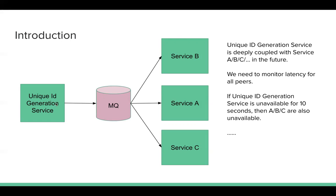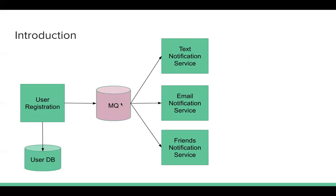In this case, we can introduce the middleware — the message queue. The unique ID generation service can generate a bunch of unique IDs and send them to the message queue. And A, B, and C, if they want to get some unique IDs, they can just fetch them from the message queue. Let's take another example: a user registration service. It receives the client request, saves the username, password, and email address to the user database, then tells the user that registration is successful.